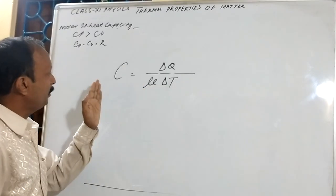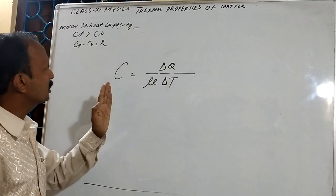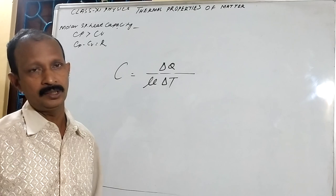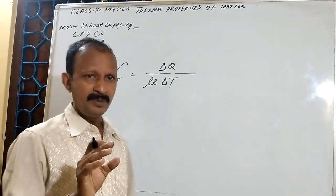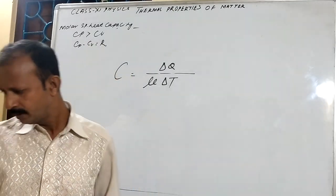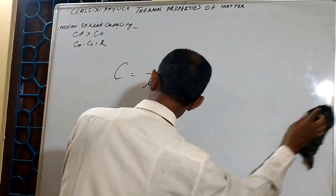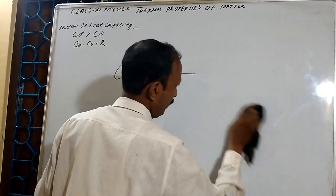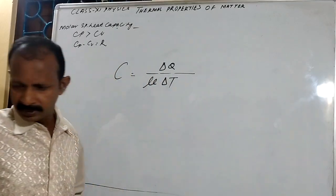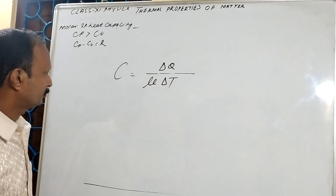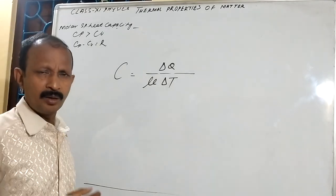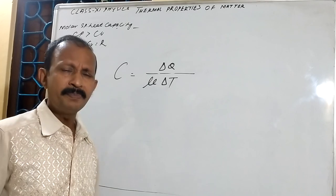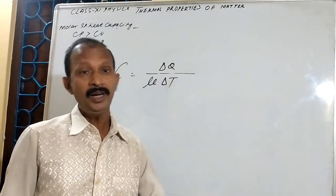But one more problem is there. Molar specific heat capacity — two types are there. It may be at constant pressure, or it may be at constant volume. Listen carefully.